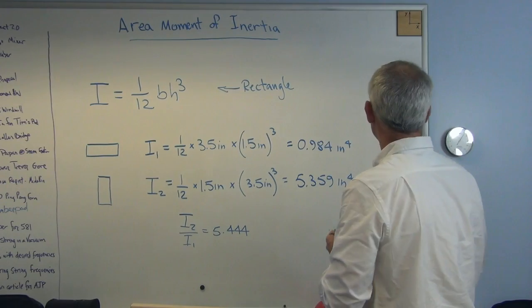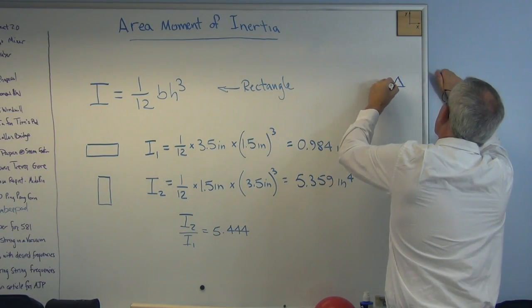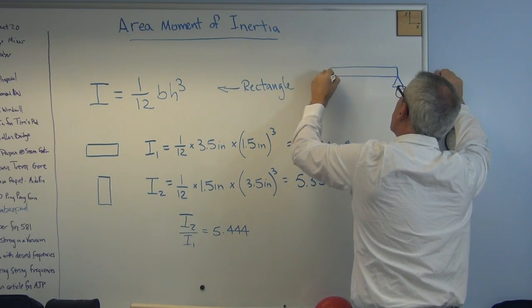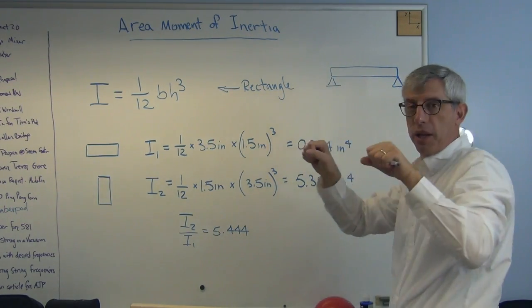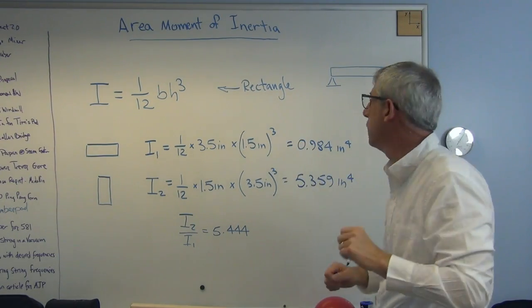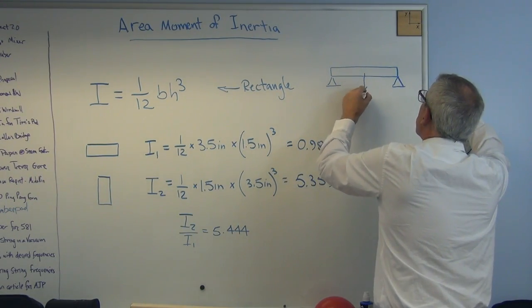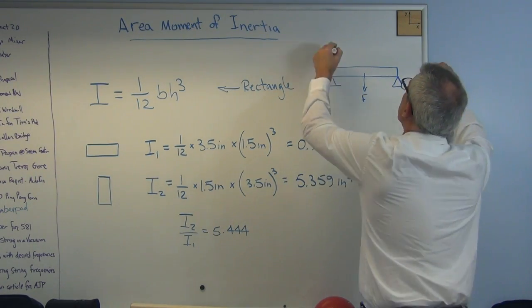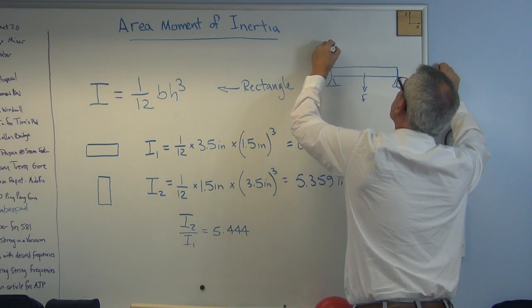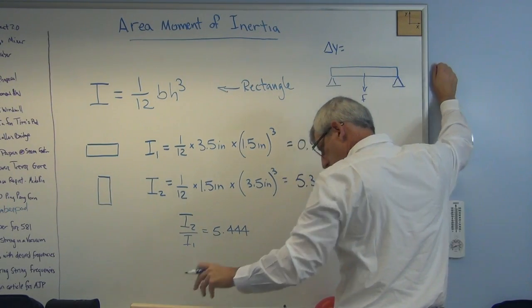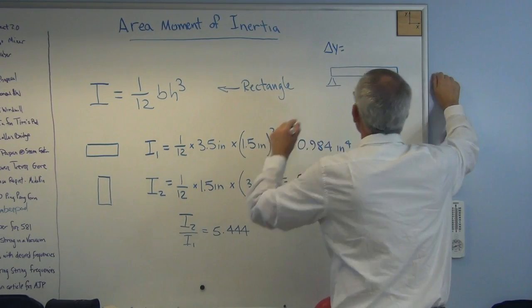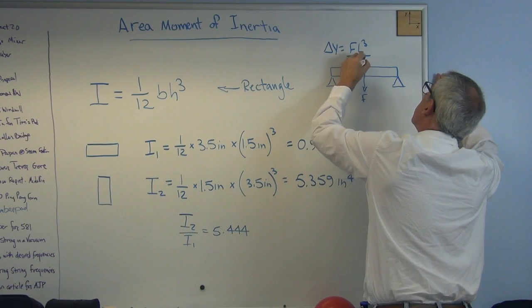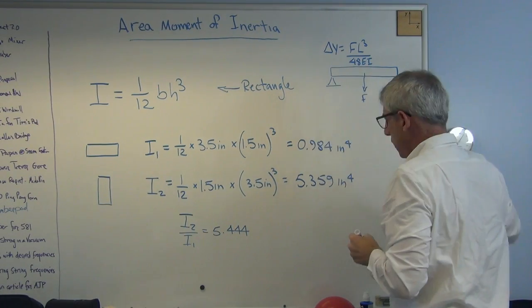Now, if you want an example, imagine I have a beam here, and it's simply supported. That is, the ends can rotate. Simply supported means the ends can do this if they want to. If I put a load right there, F, and I want to find the displacement right in the middle, I'll call that maybe delta y for displacement.